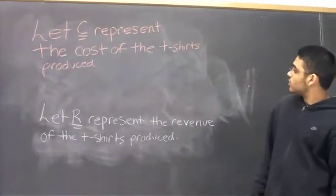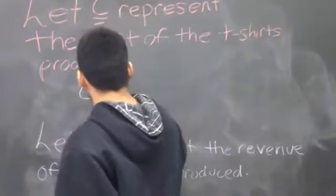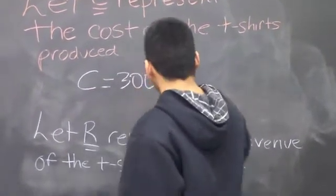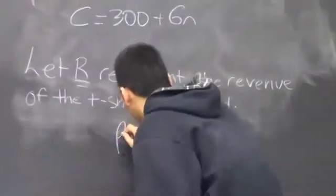Let C represent the cost of the T-shirts produced, and let R represent the revenue of the T-shirts produced. So therefore, C equals $300 plus $6N, and R equals $8 times N.